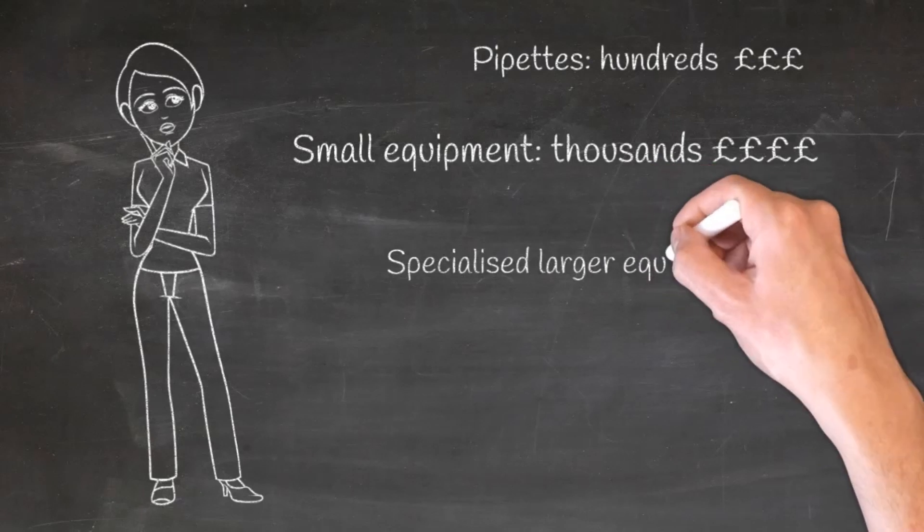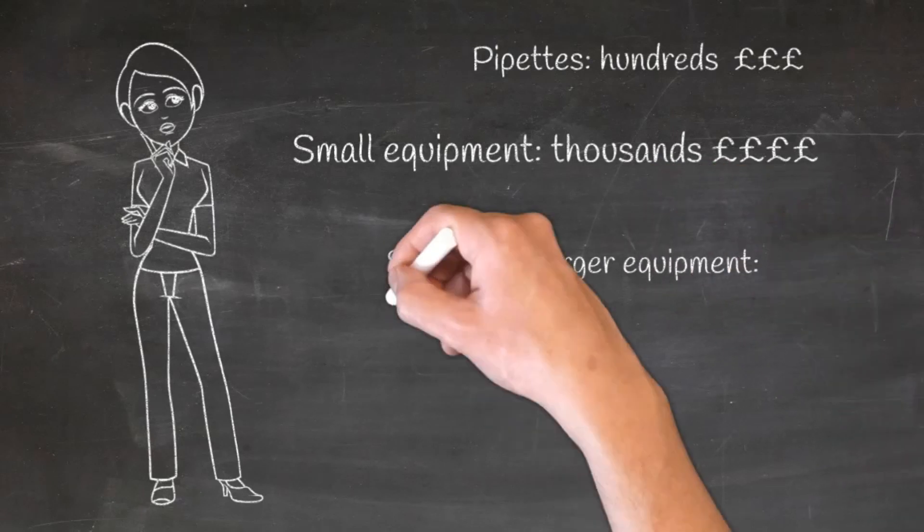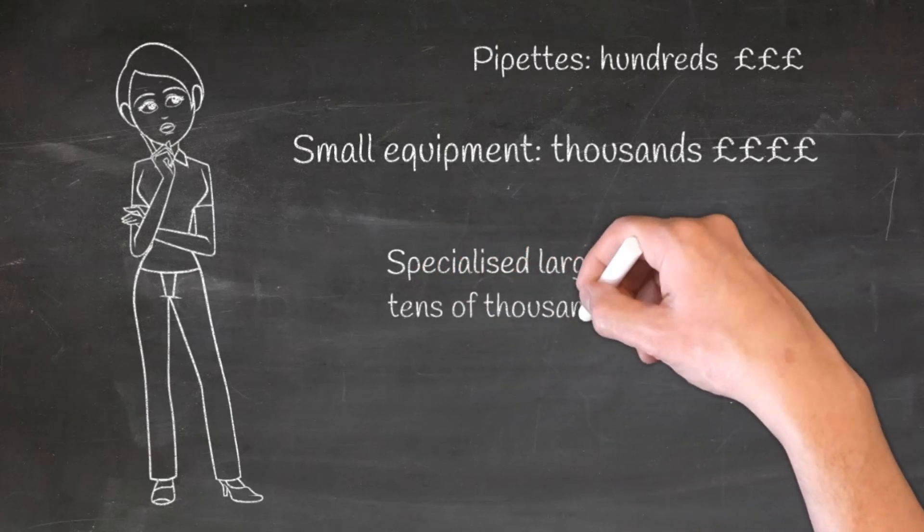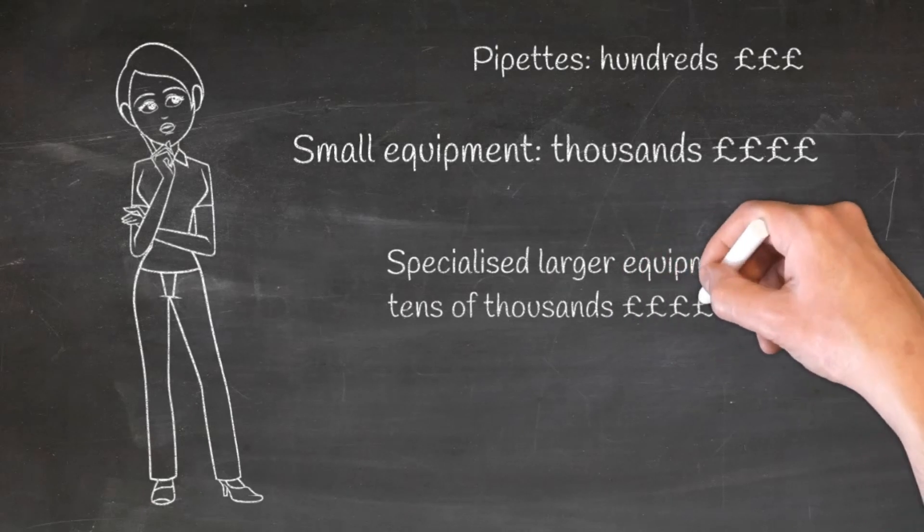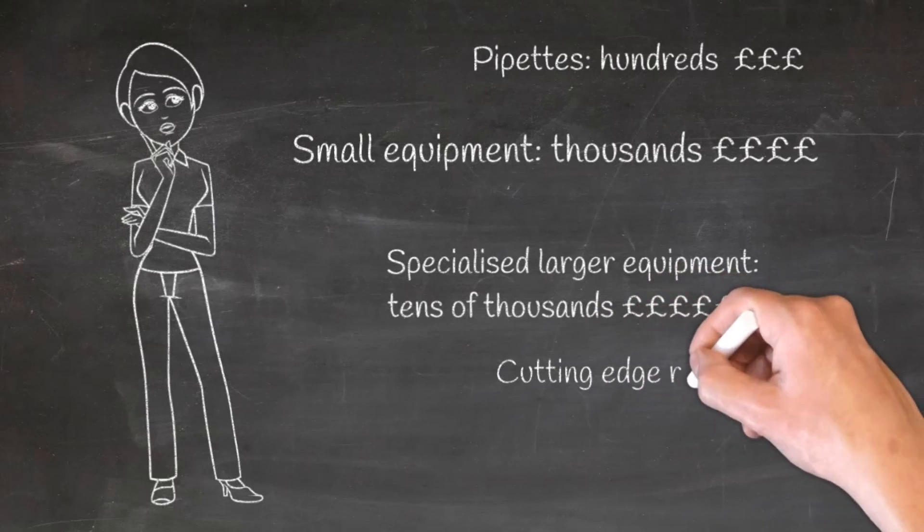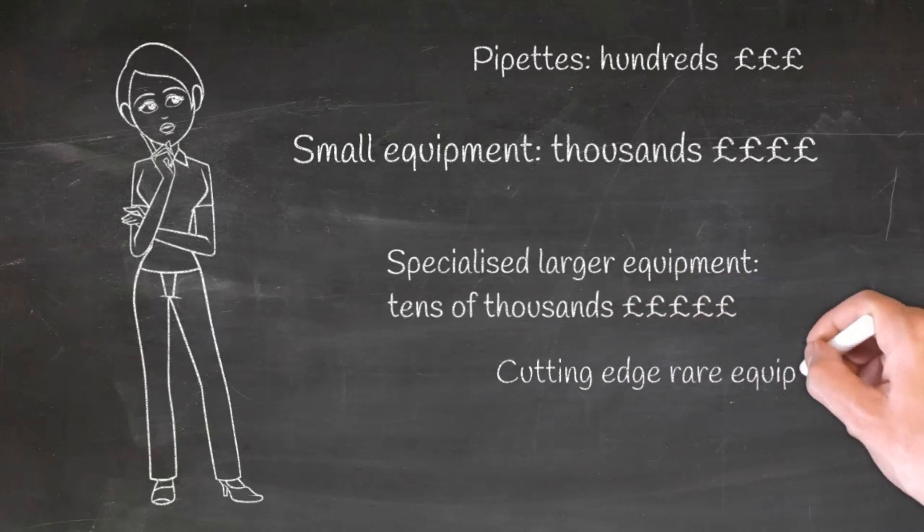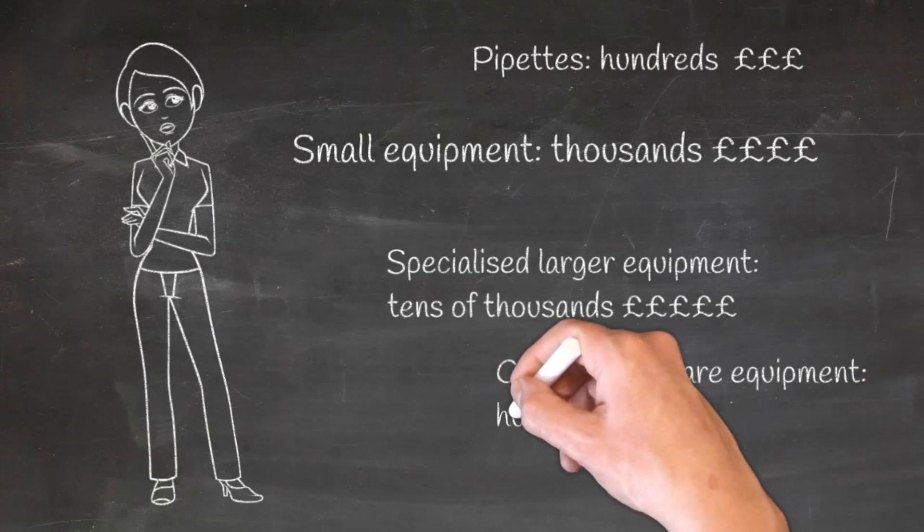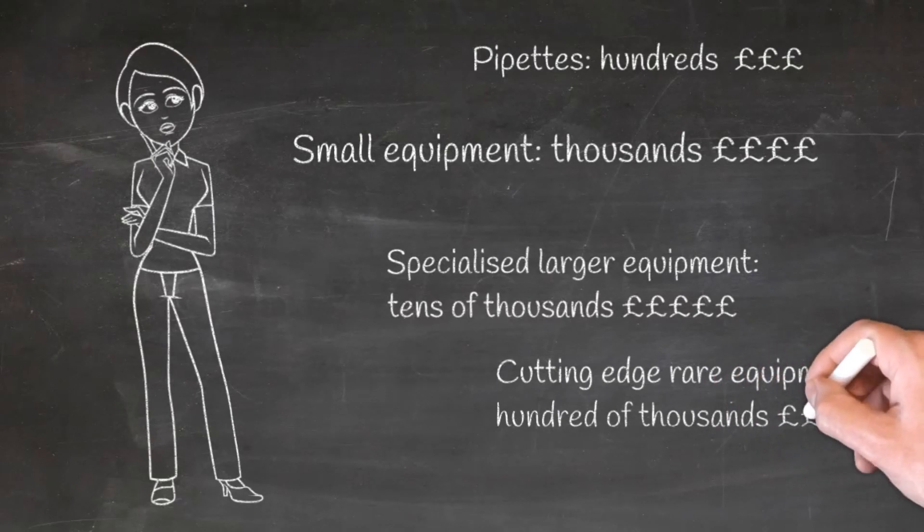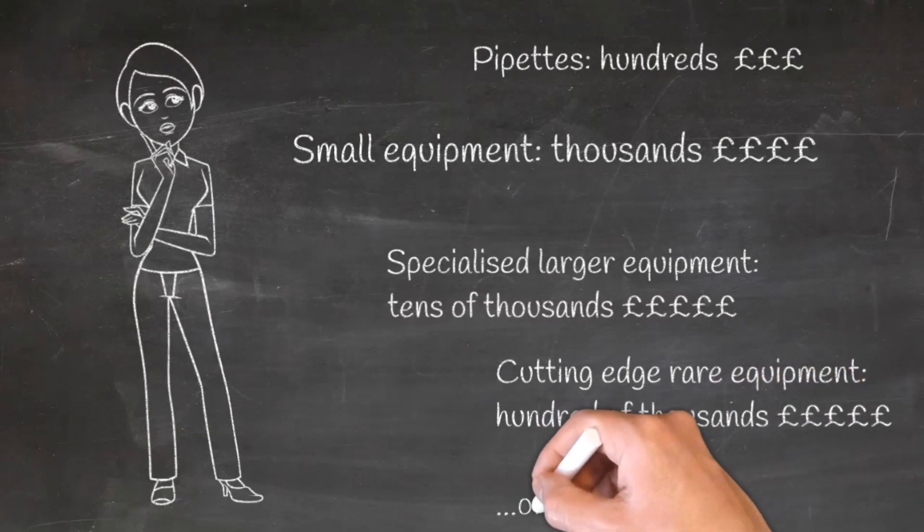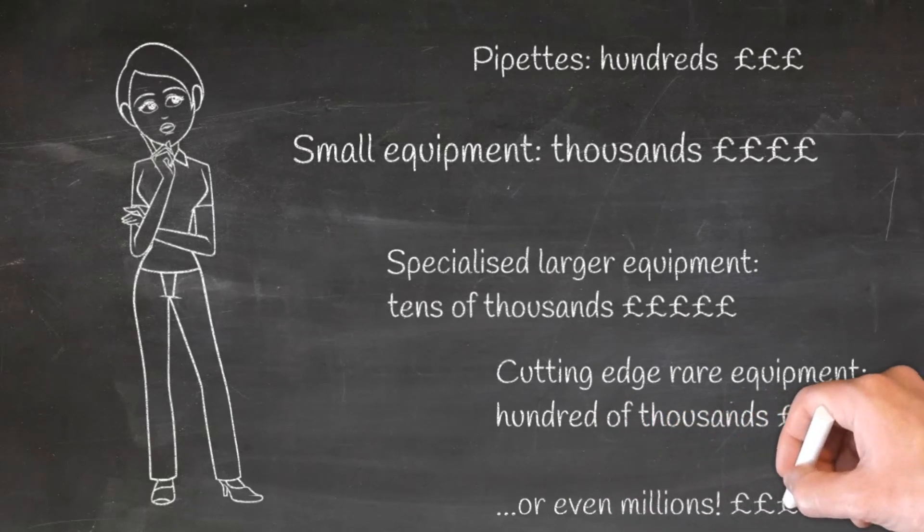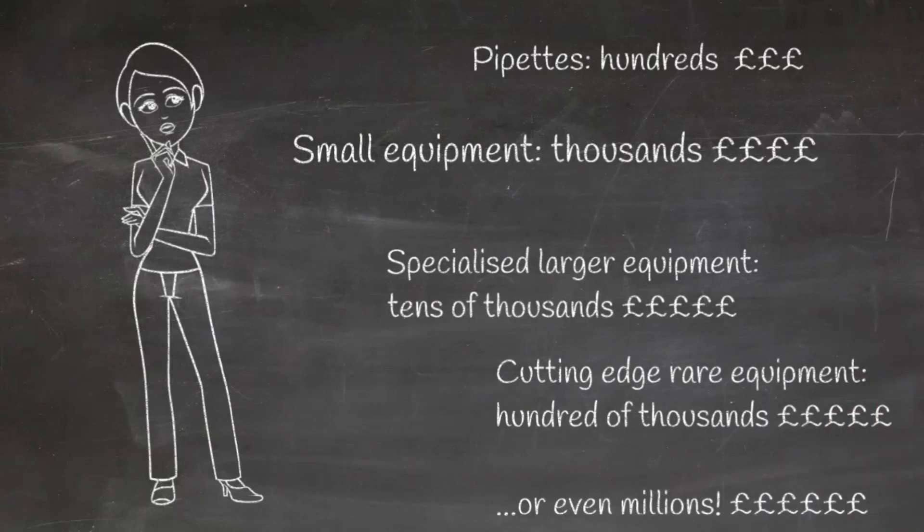More specialized equipment will usually have a couple of pieces of these in each lab, or you might have to go to another lab within your building, maybe on a different floor to use one of these pieces of equipment. An example would be something like a PCR machine, which is what's been in the news an awful lot lately because that's what they use to test for coronavirus. But then for those cutting edge pieces of equipment, these are the things that you might need to travel to another city or even another country to get access to. And those can cost hundreds of thousands of pounds or even millions, and you're a very lucky scientist if you have access to some of those.